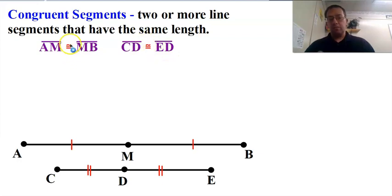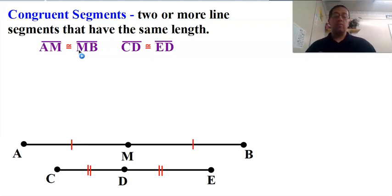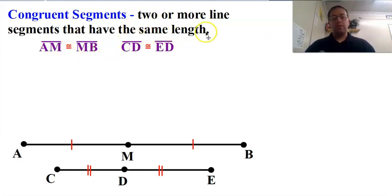This symbol right here — this little equal sign with a squiggle on top of it — that is congruent, because we don't want to write out the words 'is congruent to' every time, so we use symbols. Geometry is very much a language of symbols. That's why I'm not writing out the word segment AM — I just put a little segment bar above it. Segment AM is congruent to segment MB, and this means they have the same length.